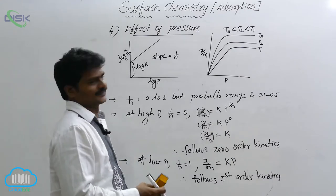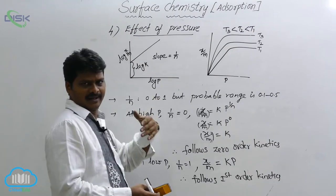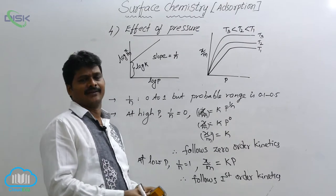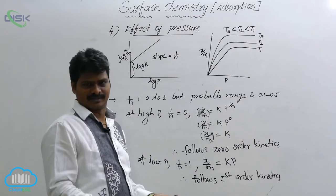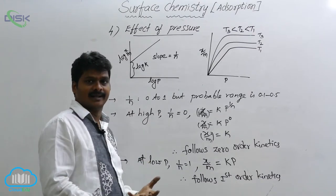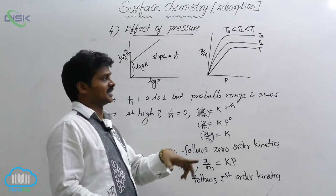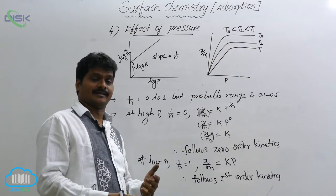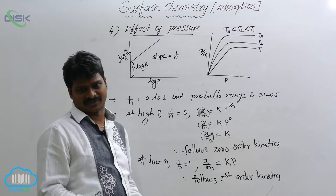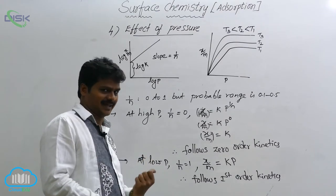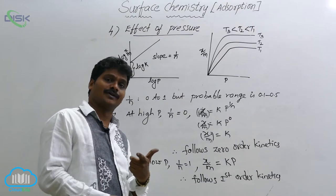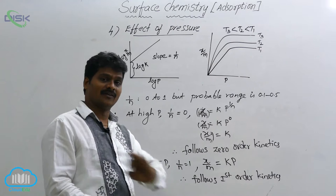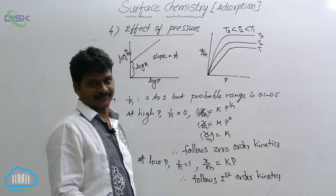There is a limitation in the Freundlich adsorption isotherm theory. This theory fails at high pressure because at high pressure, multilayer formation occurs in physical adsorption, but this theory is confined to a single layer. That is why this theory completely fails at higher pressure.